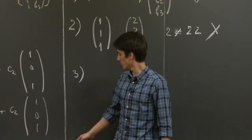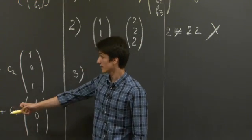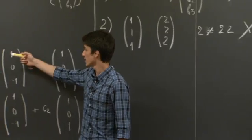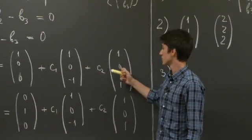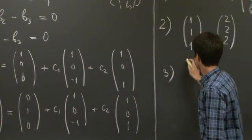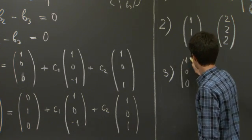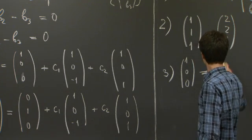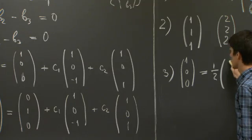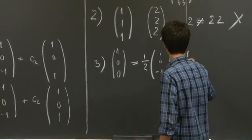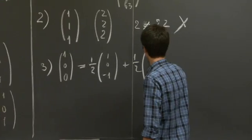What I'm hinting at is the following thing, that in fact (1, 0, 0) is a linear combination of (1, 0, -1) and (1, 0, 1). And it's fairly obvious to see which linear combination of these two vectors it is. It's 1/2 (1, 0, -1) plus 1/2 (1, 0, 1).